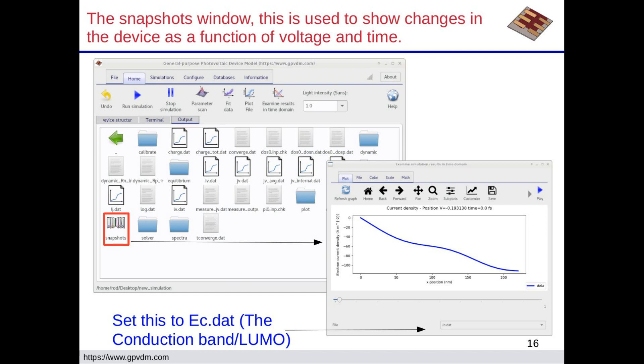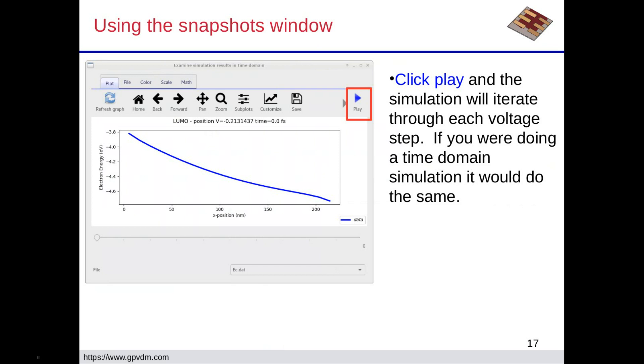So if you just select that down there to be EC, and you can see there's lots of other outputs there too. Then click the play button. You'll be able to sort of scroll through the simulation as it's happening as a function of voltage and really look at what's going on in the device.